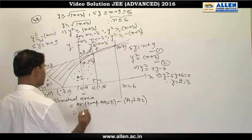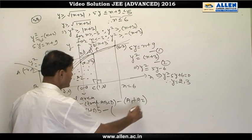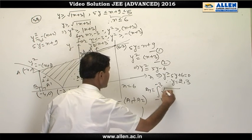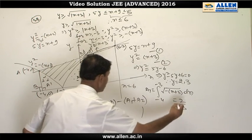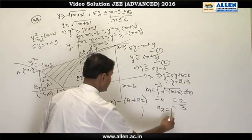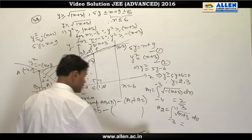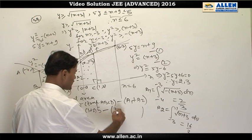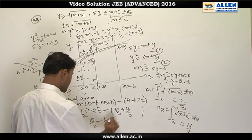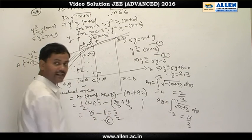The trapezium area = ½ × (1 + 2) × 5. Area A1 is found by integrating √(−x − 3) from −4 to −3, giving 2/3. Area A2 is found by integrating √(x + 3) from −3 to 1, giving 16/3. So the required area = 15/2 − (2/3 + 16/3) = 15/2 − 6 = 3/2. Therefore option C is the correct answer.